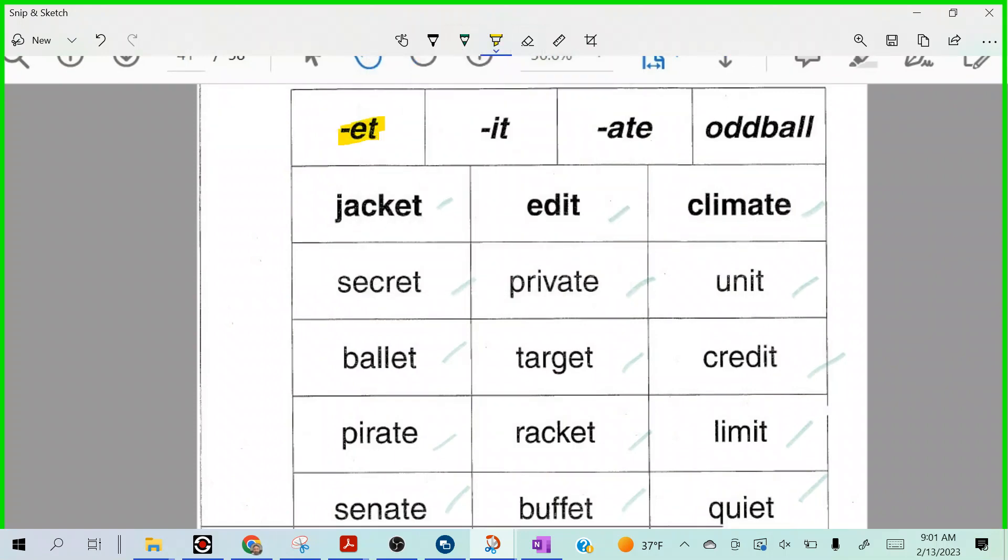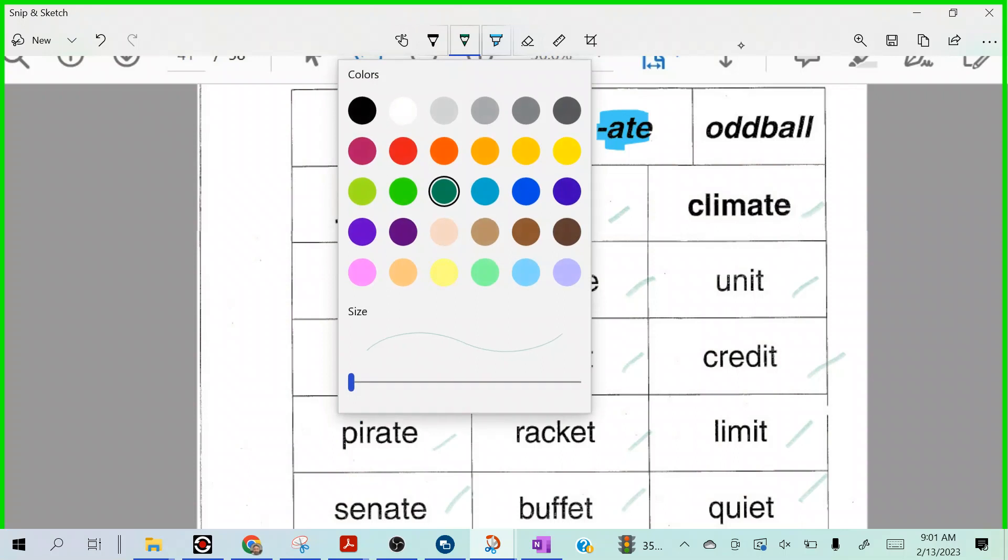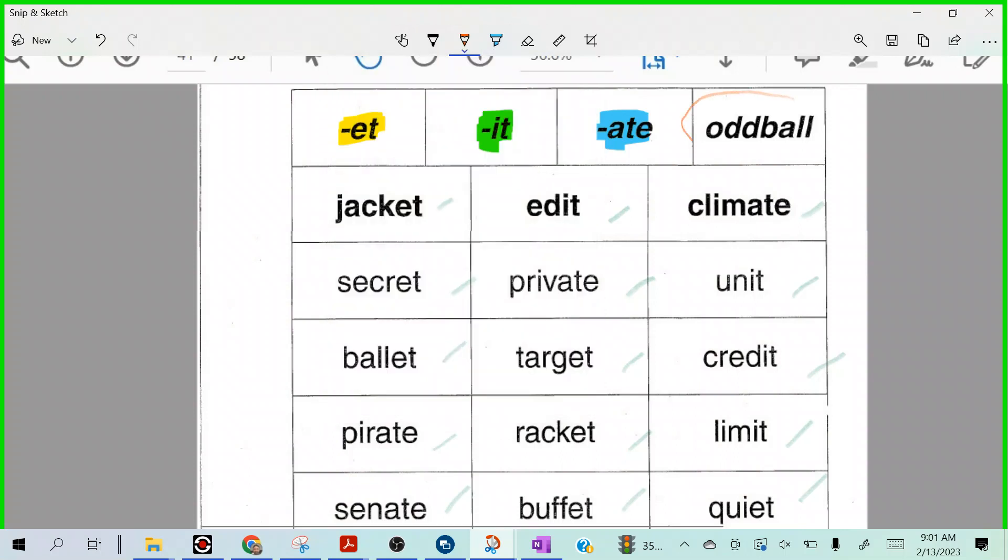All right. So my first one is E-T ending, right? I'm going to put that one in yellow. Words that end in I-T I'm going to highlight in green. And my words that end in A-T-E I'm going to highlight in light blue. And what I'm going to do with my oddballs, I'm going to circle those in orange. Now you could set your key up differently, but that's just how I'm doing it.